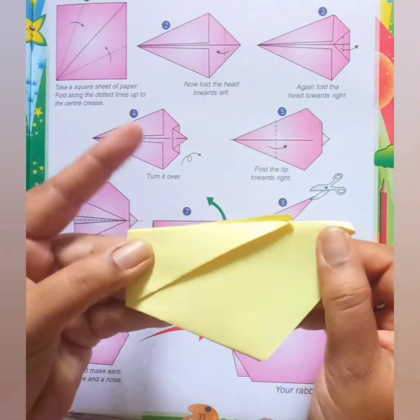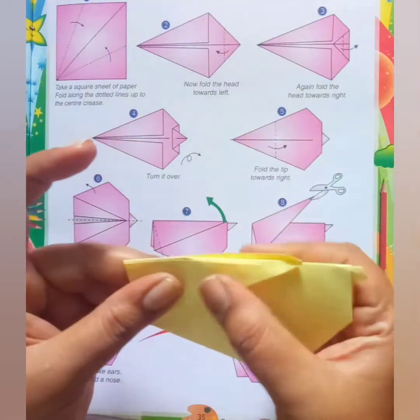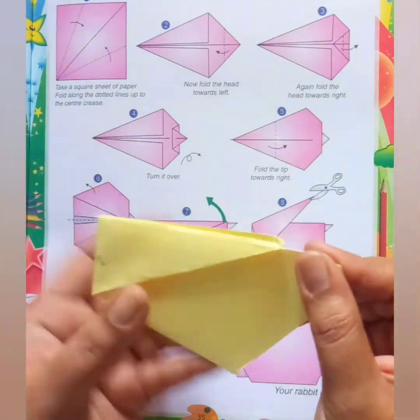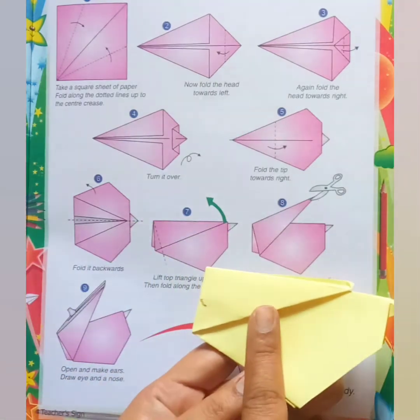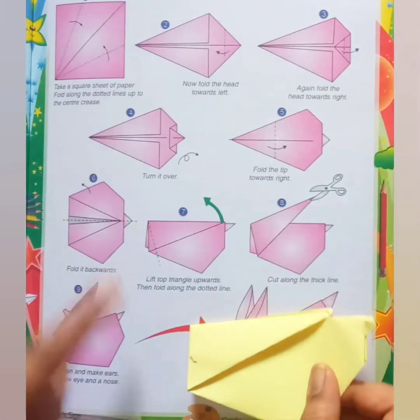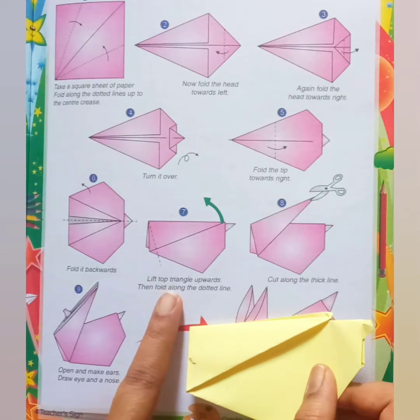Now step six, fold it backwards. You have to fold like this. So this is the sixth step.